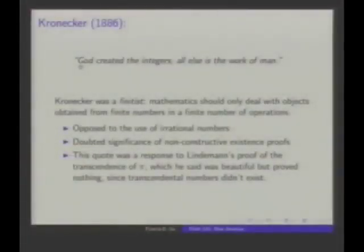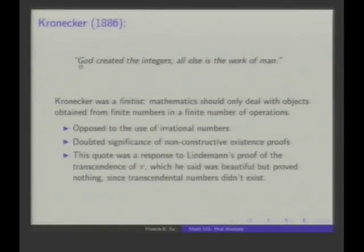This particular quote was a response to Lindemann's proof — in 1882 he proved that pi was transcendental, meaning it's not the root of a polynomial with integer coefficients. Kronecker's response was: 'Yes, it's a beautiful proof, but it's of no importance because, as we all know, transcendental numbers don't exist.' Kronecker's point of view met with a lot of resistance because people felt he was dismissing whole areas of inquiry.